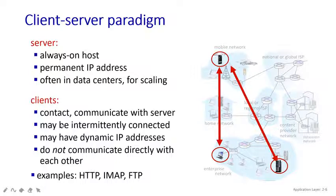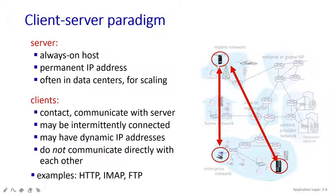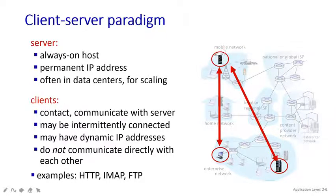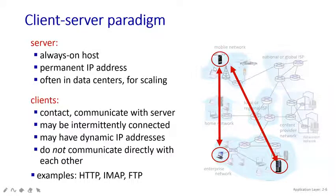The client's job is to contact and communicate with the server. Whenever a client wants to send a message, it has to go through channels — local ISP, then global ISP. Clients may be intermittently connected and have dynamic IP addresses. For example, student 122 has a problem today, so 122 is that client's IP address. Tomorrow, student 123 has a problem, so 123 becomes the client's IP address.